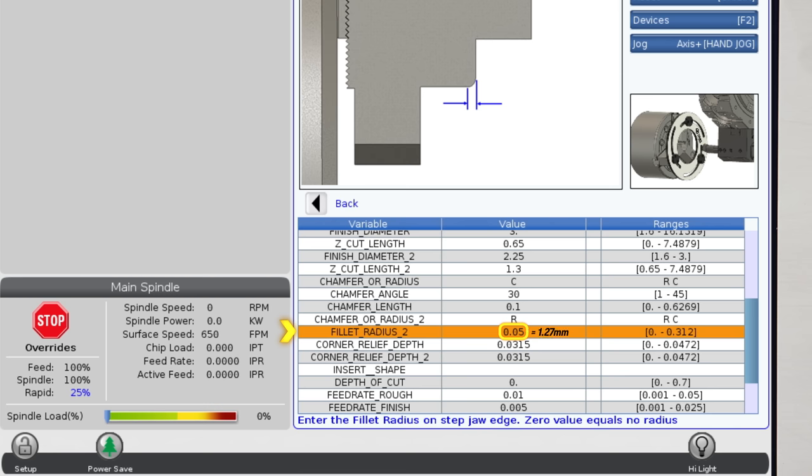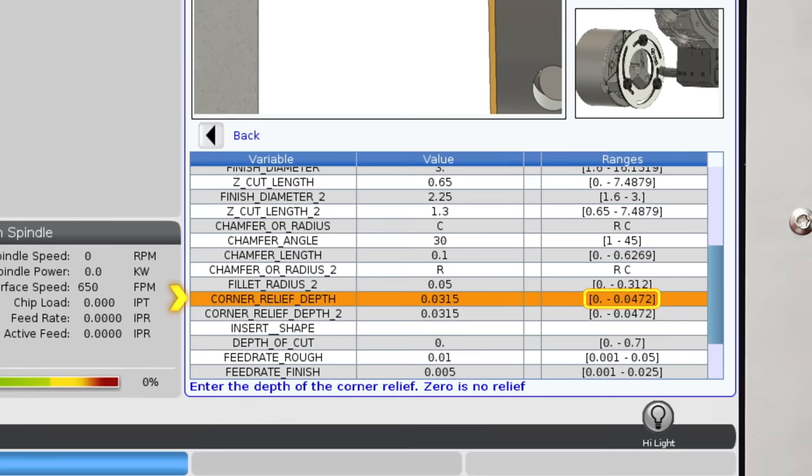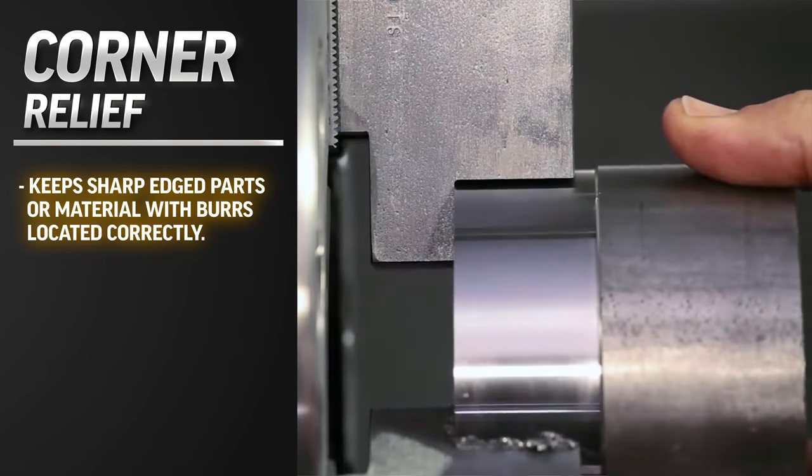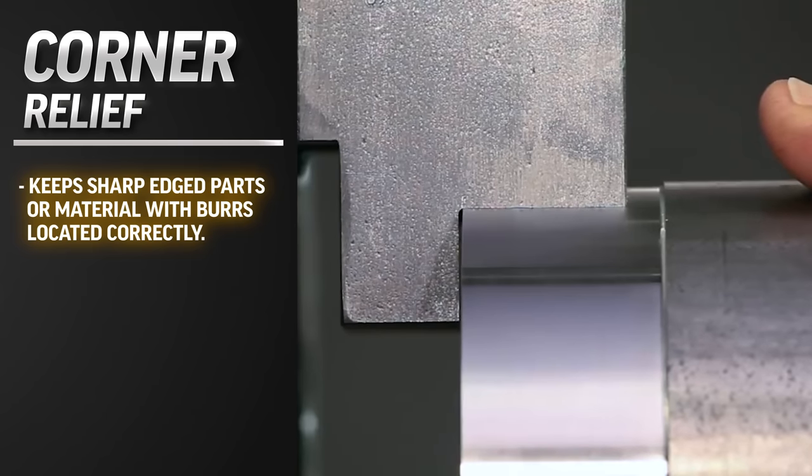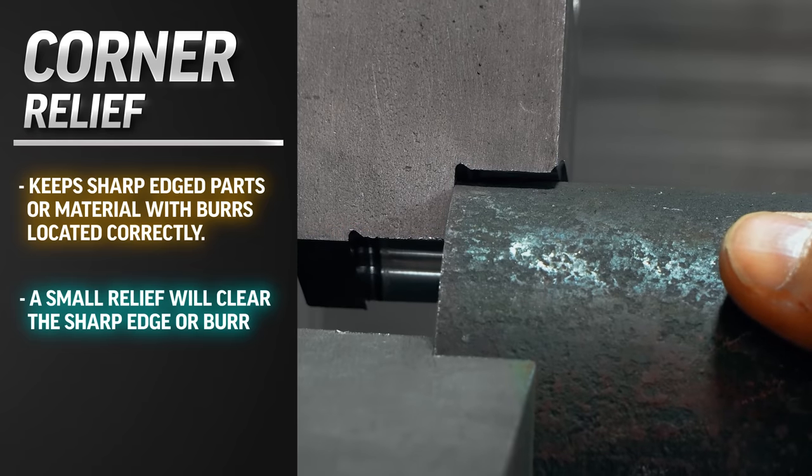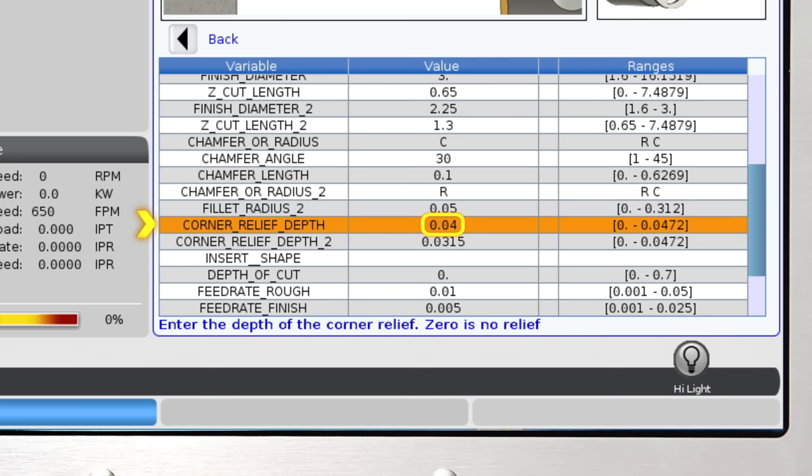The next row asks for our corner depth relief. The default is based on the insert radius entered earlier and the range for this isn't very large. There's a reason we typically want a corner relief. Without it, any workpiece with sharp edges or raw material with sharp burrs will not locate correctly to the jaw face. A small relief is required to clear the sharp edge or burr. So I'll change this to 40 thou on my first corner for the raw blank. I'll leave the corner relief for the step jaw diameter at 31 and a half thou.